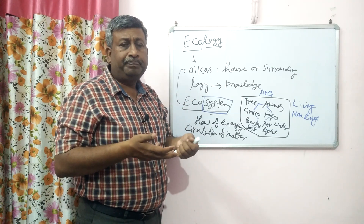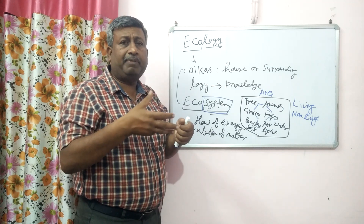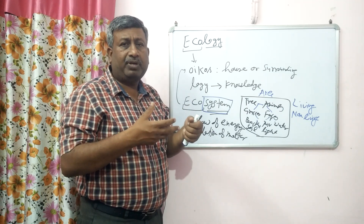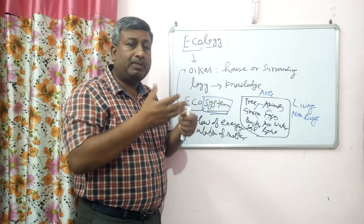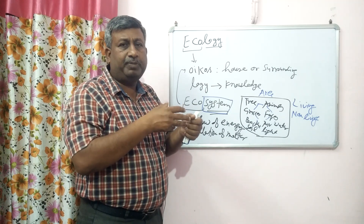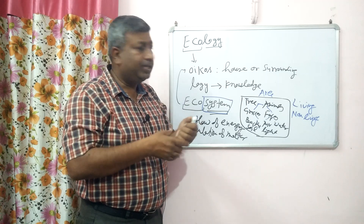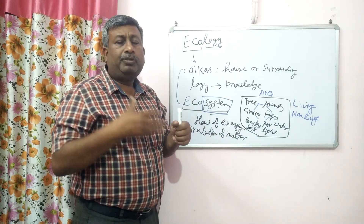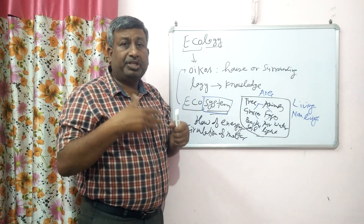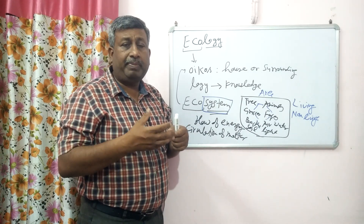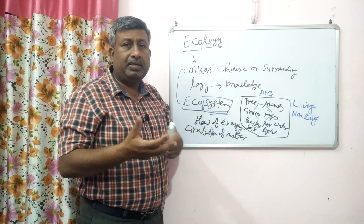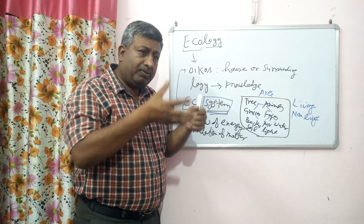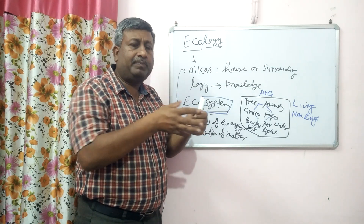River is an ecosystem. Forest has different types of animals — tropical rainforest, temperate forest, mountain forest, different types of grass species. So ecosystem may be forest ecosystem, may be grass ecosystem, may be river ecosystem, may be lake ecosystem, may be a pond ecosystem.